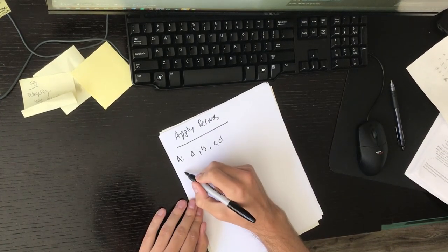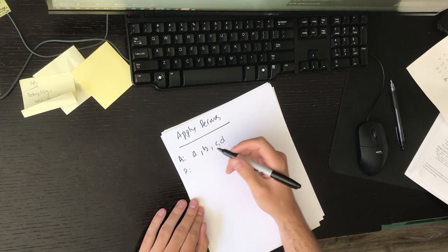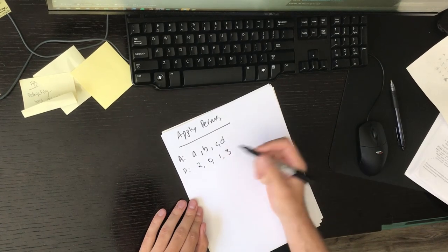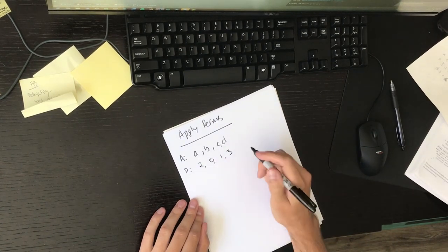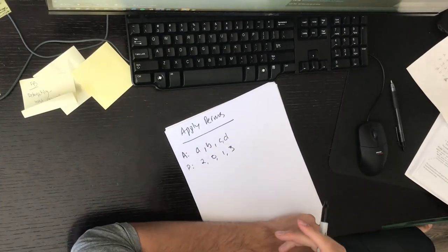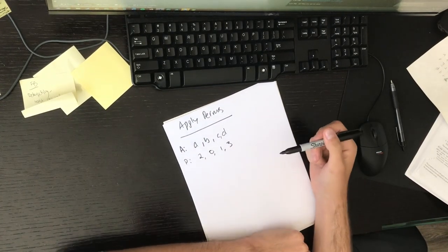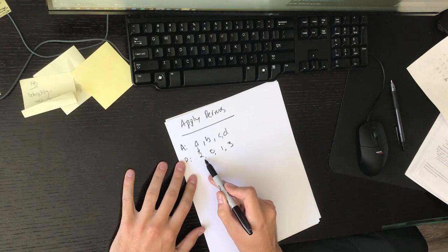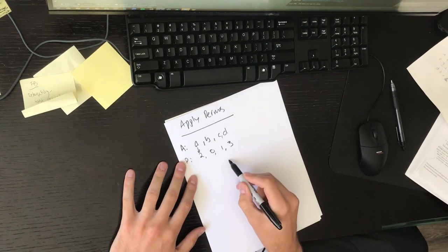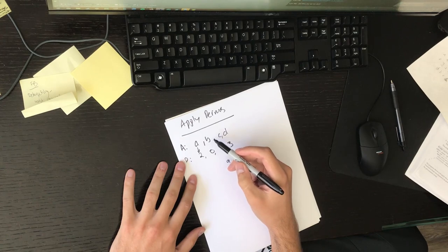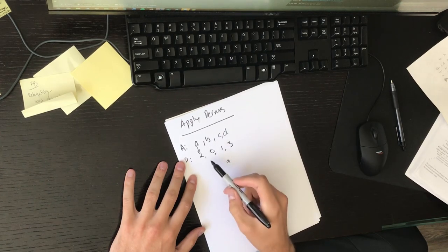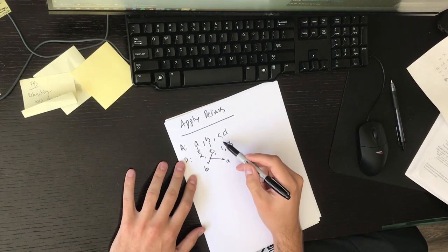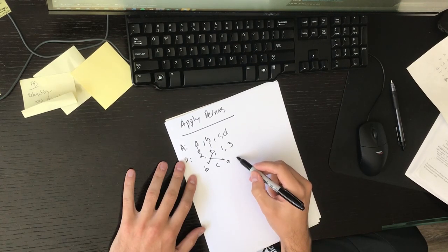So given a list and a permutation, which we'll call P, say this was 2, 0, 1, 3. Just another list, this one does have to be integers. Basically apply this permutation to A, and by that it means that the entry at A should go to the second index, 0, 1, 2, so this should be A, B should go to the 0th index, C should go to the first, and D should go to the last one.